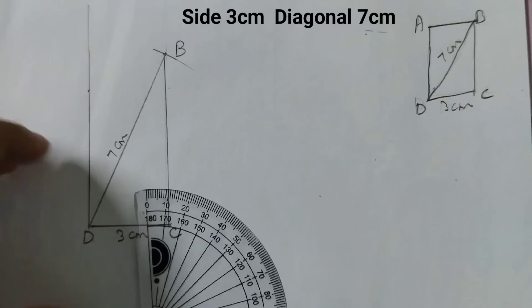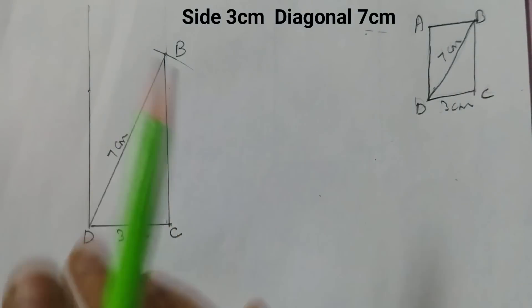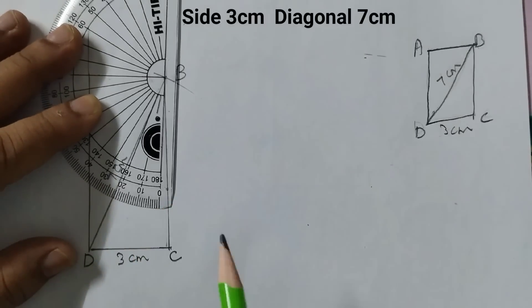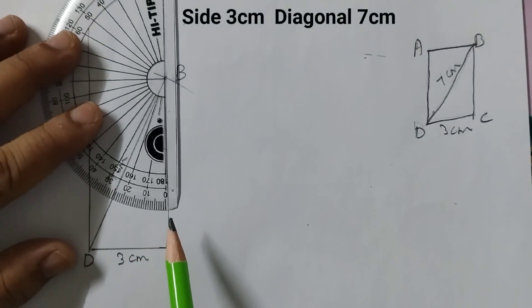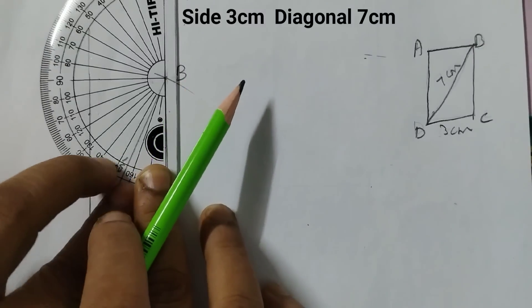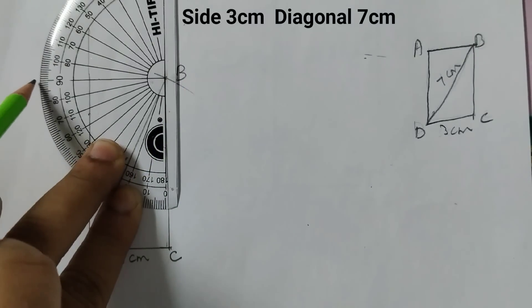And now we will draw a 90 degrees angle at B. Place the protractor like this and mark here.